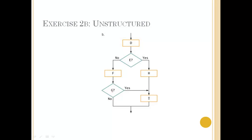So what we're going to do is, just like we did with the previous example where we put A in a different location, we're going to do the same thing here. We're going to repeat process I and draw G's flow arrow like this. Yes, we've got two different instances of process I — they do the exact same thing — but this is how we know it's structured, because one entry point here and one entry point there.